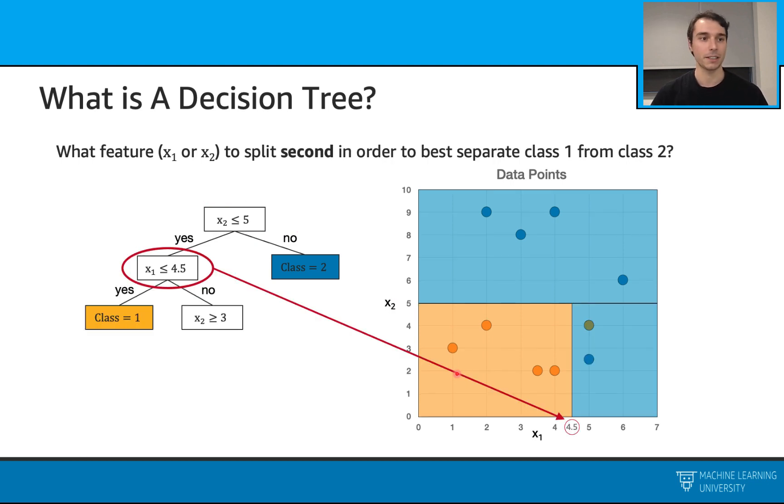So here's my second question. x1 less than or equal to 4.5. Similarly, I will split my data points into these yes and no subsets here. Over here, as you see, I am only considering this part of the data. Because this part is already classified. So we will have these yes and no subsets here. On the left, we have yes. On the right, we have no.